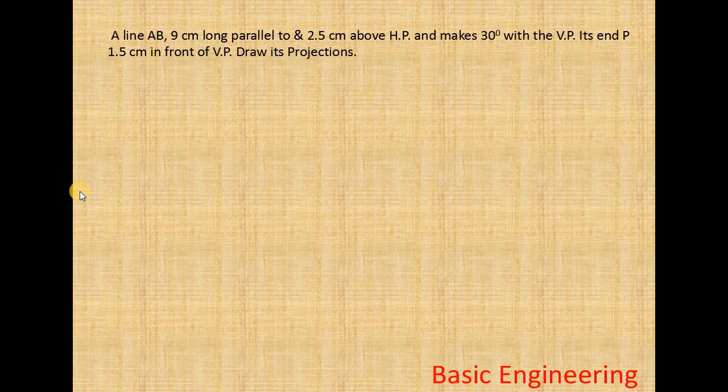Today we will discuss about a line inclined to one plane and parallel to another plane. A line AB, 9 cm long, parallel to HP, 2.5 cm from HP, and makes 30 degrees with the VP. Its end P is 1.5 cm in front of VP. Draw its projections.